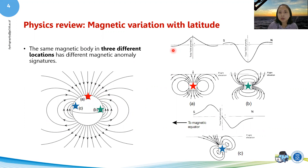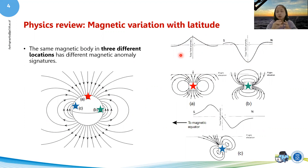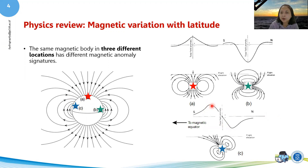If the body is at the North Pole, it will have a positive signal. If it is at the equator, it will have a negative signal. At those two extremes, the signal is almost exactly over the body itself. But in the middle latitudes, you get a slanted signal — the peak and trough are not exactly on top of the body. So doing a survey in Indonesia will give different results than doing one in Europe.